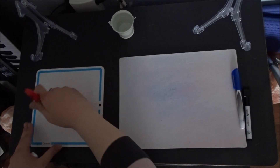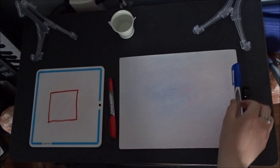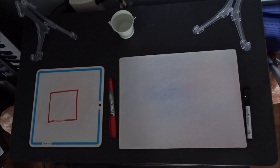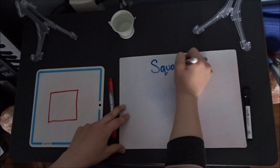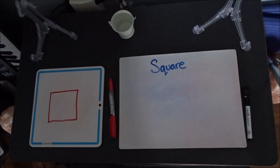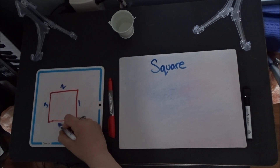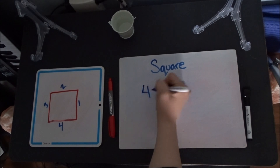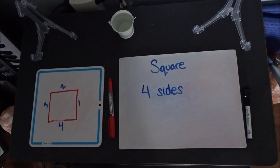The next shape we are going to look at — what is that shape's name? If you said square, you would be right! Good job. How many sides does our square have? Let's count: one, two, three, four. So our square has four sides.